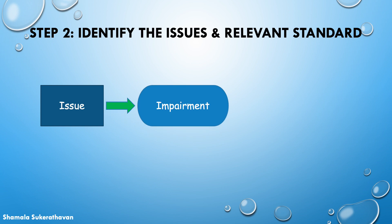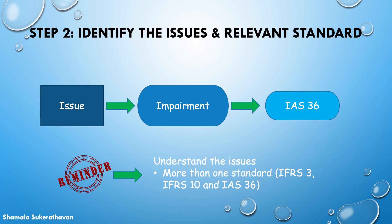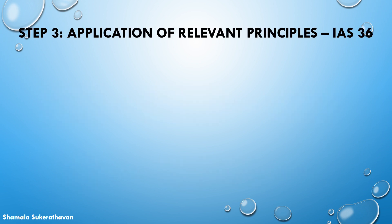The other issue in this question is the impairment loss, if any, arising from the impairment review of goodwill. This falls within the scope of IAS 36. As mentioned in my previous tutorial series, it's important to read the question line by line and deal with the issues, as the question may require the application of principles for more than one standard — as seen here requiring the application of IFRS 3, IFRS 10, and IAS 36.